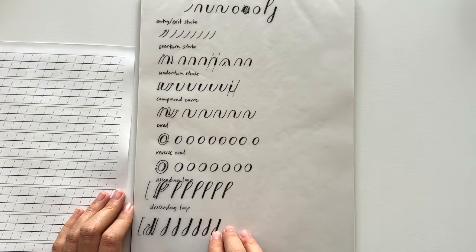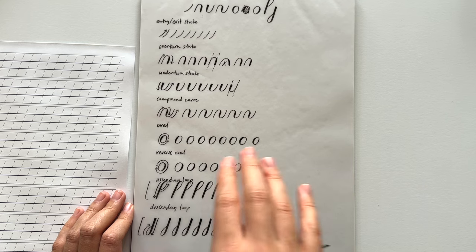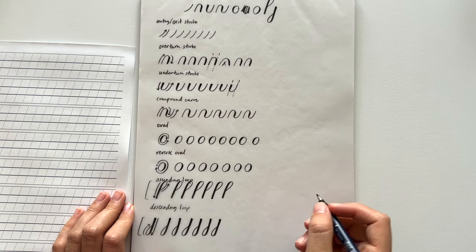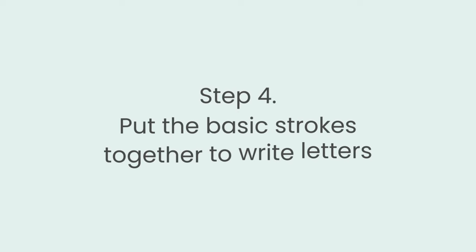And those are the basic strokes of calligraphy. So if you practice these strokes over and over and try to work at getting them really consistent you'll get better at calligraphy a lot more quickly. Now once you practice the basic strokes you can put them together to form letters.